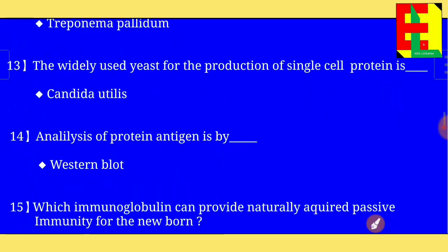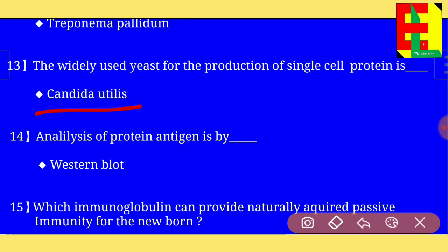Question number thirteen: the widely used yeast for the production of single cell protein is — the answer is — Candida utilis.